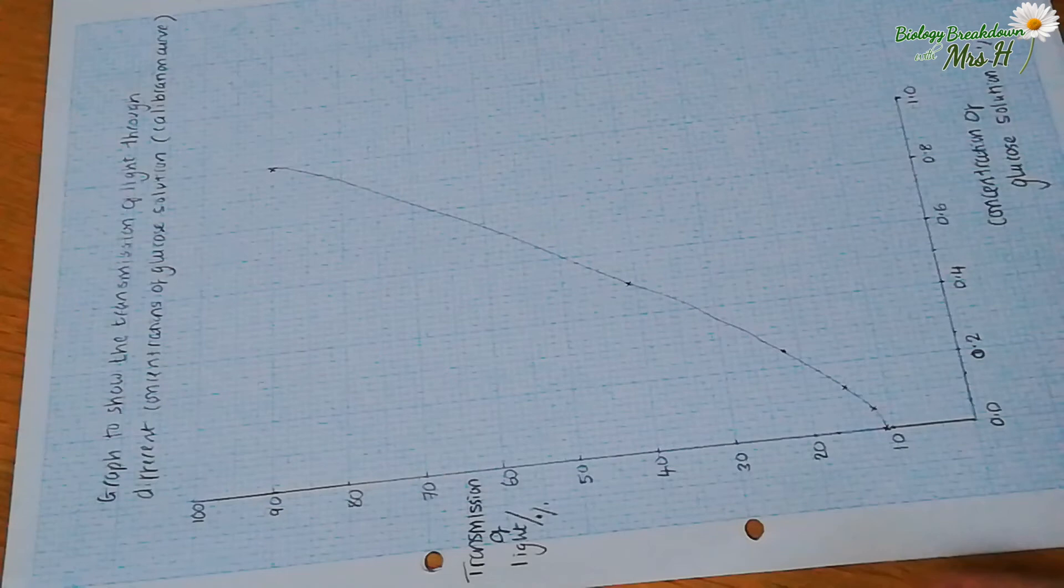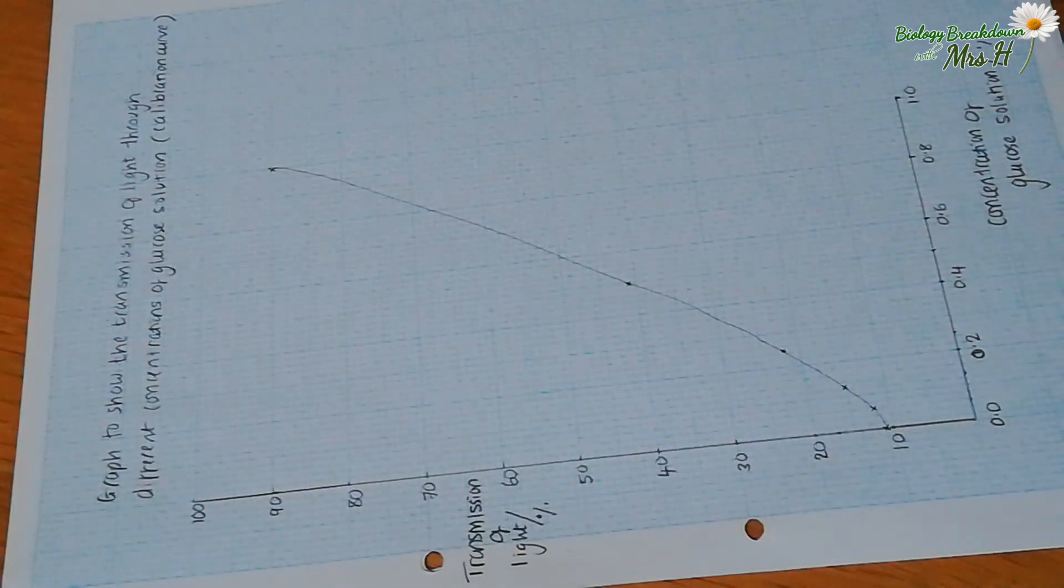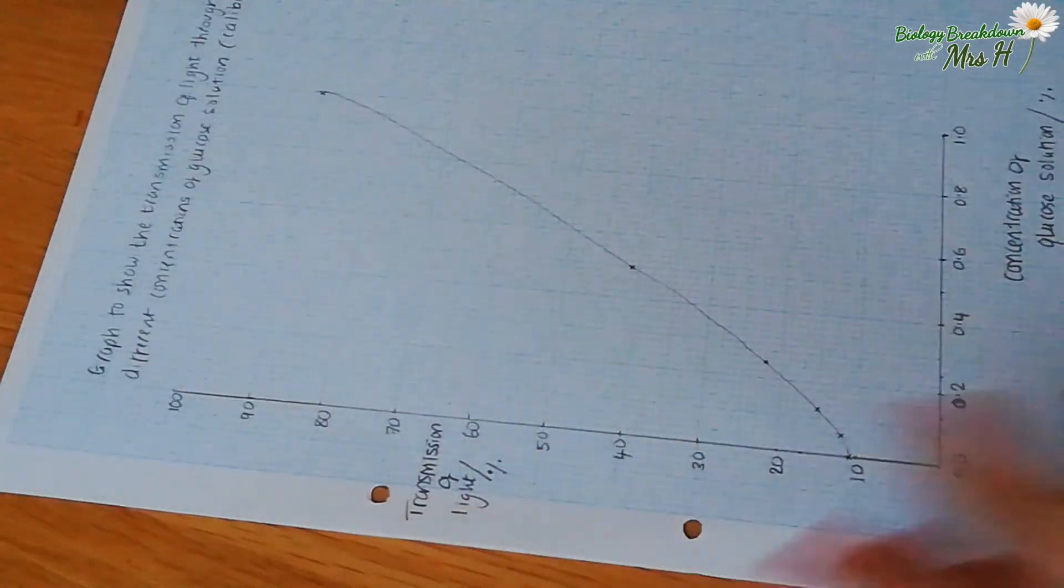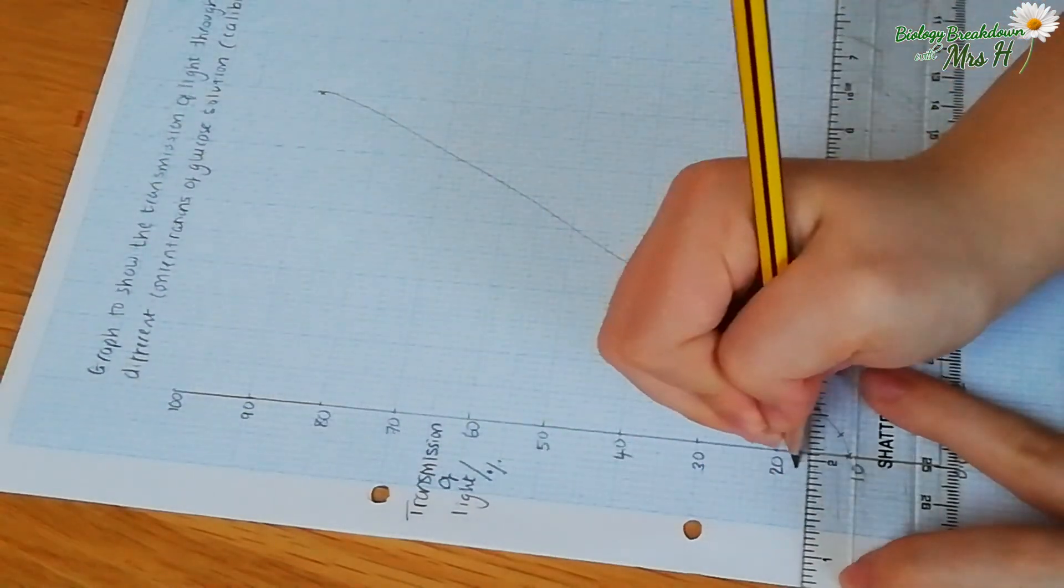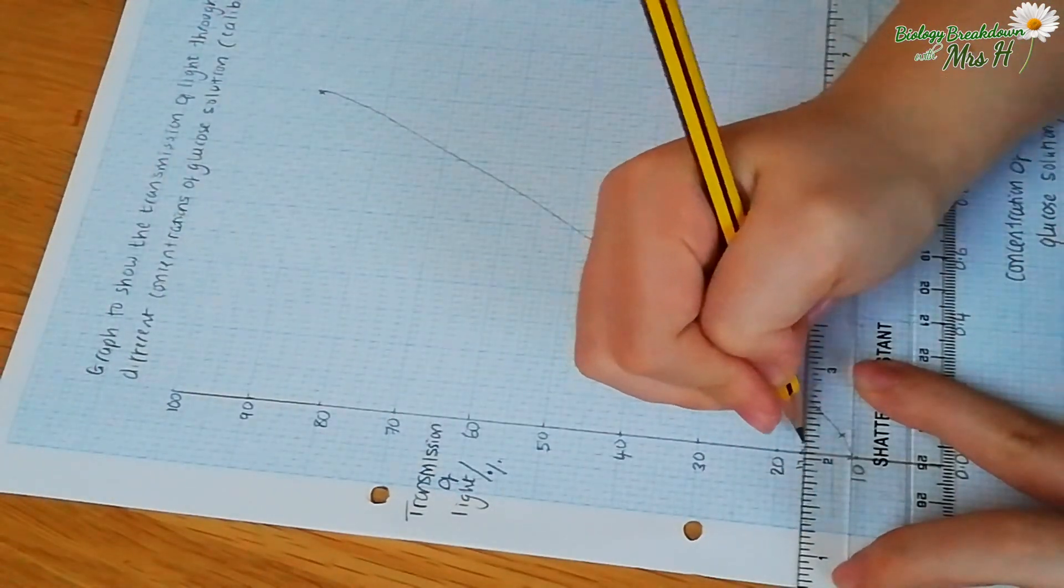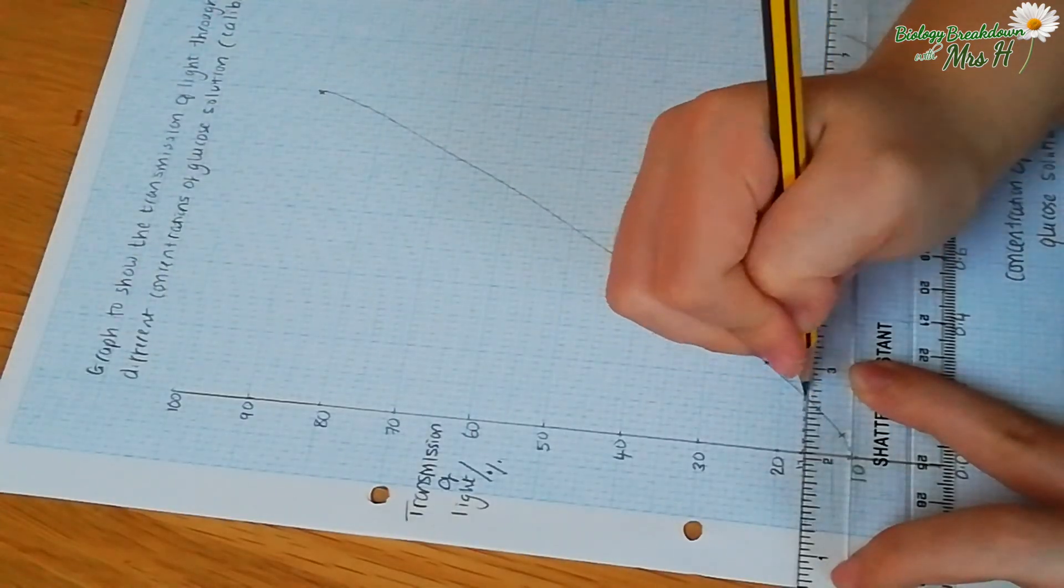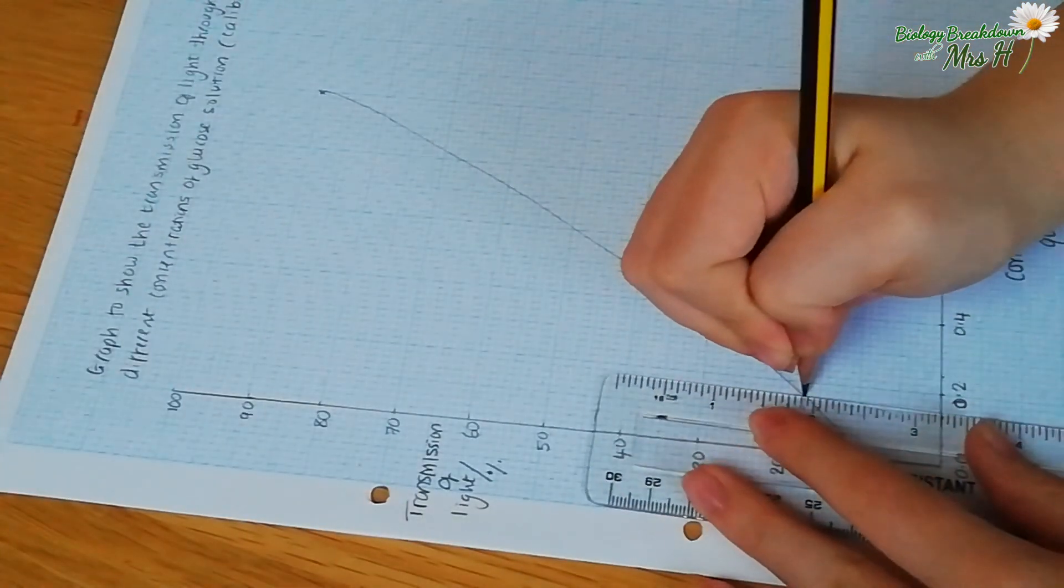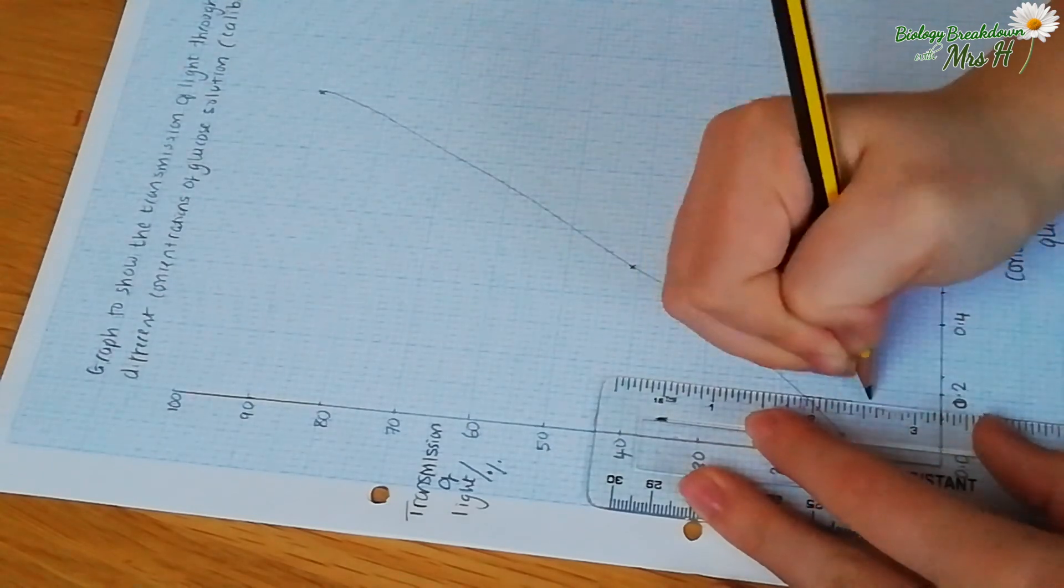Now the unknown allowed 17% of light to transmit through. So find 17 on the y-axis, draw a dashed line until it hits the curve, then draw a dashed line down towards the x-axis and read off the concentration.